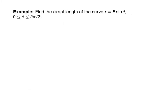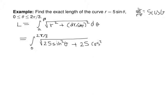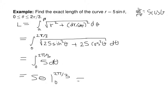For arc length in polar coordinates, the formula is ∫_α^β √(r² + (dr/dθ)²) dθ, with α = 0 and β = 2π/3. For r = 5sinθ: r² = 25sin²θ and dr/dθ = 5cosθ, so (dr/dθ)² = 25cos²θ. Inside the root: 25sin²θ + 25cos²θ = 25. So the arc length is ∫₀^(2π/3) 5 dθ = 5θ |₀^(2π/3) = 10π/3.